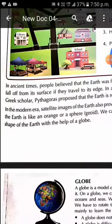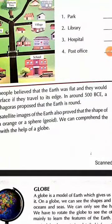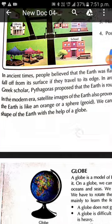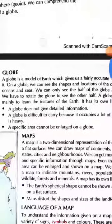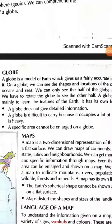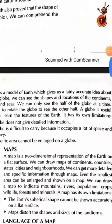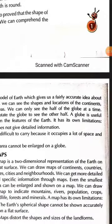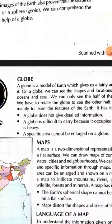We can comprehend the shape of the earth with the help of a globe. Globe is an exact model of the earth. It gives us a fairly accurate idea about it. On a globe, we can see the shape and location of the continents, oceans and seas.